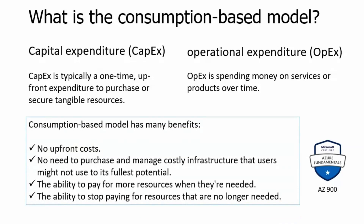The consumption-based model has many benefits. The first benefit is there is no upfront cost, meaning no capital expenditure. The second advantage is no need to purchase and manage costly infrastructure that users might not use to its fullest potential — we pay as we go. The third advantage is the ability to pay for more resources when they are needed; it is expandable when we require more resources.